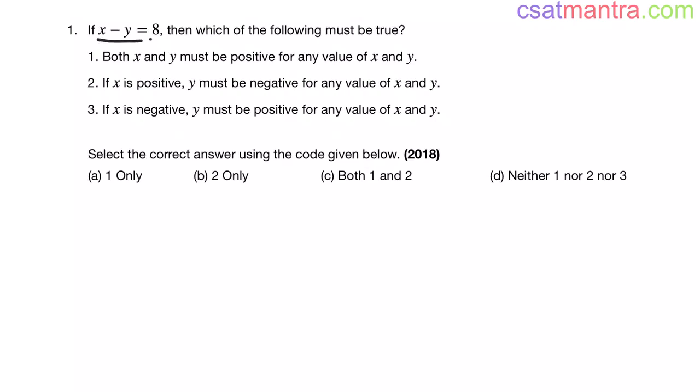If x minus y equals 8, then which of the following must be true? 1. Both x and y must be positive for any value of x and y. 2. If x is positive, y must be negative for any value of x and y. 3. If x is negative, y must be positive for any value of x and y. Select the correct answer using the code given below. This question is from 2018.